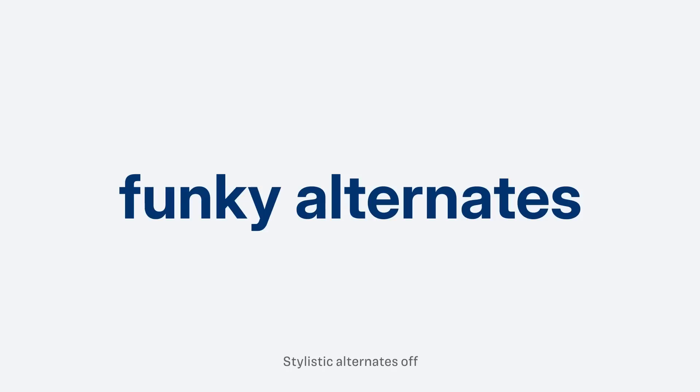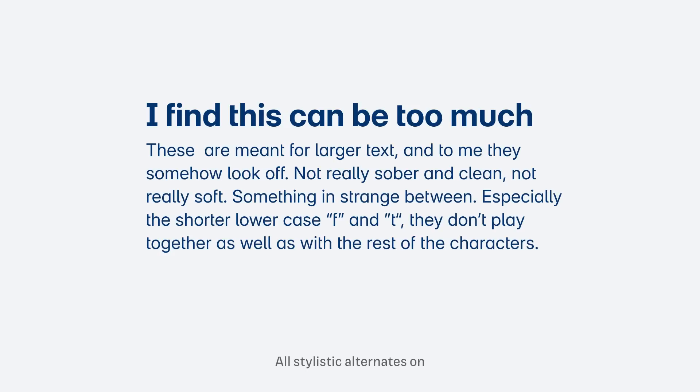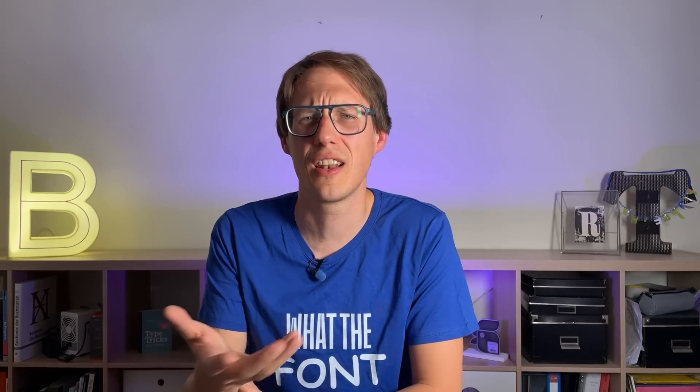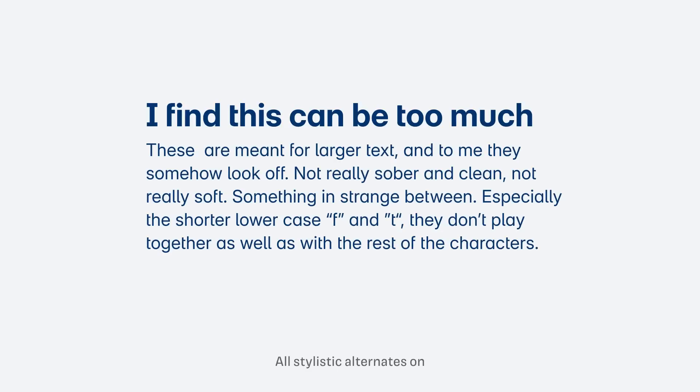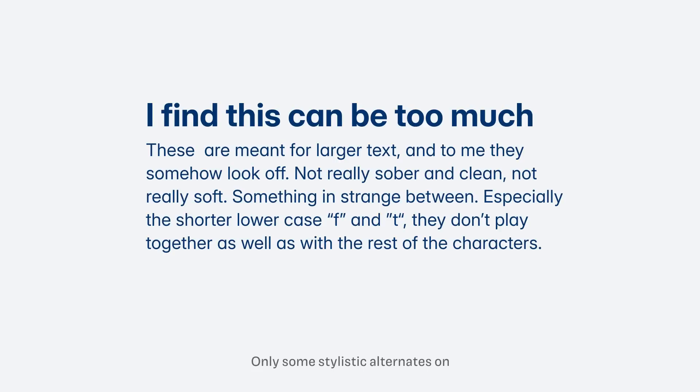Also new with version 4 are some additional stylistic alternates, which can highlight that softer look established by the true italics — like the shorter F and the shorter T, and also that simpler U. These are meant for large text, and to me they look somehow off. Not really sober and clean, not really soft and approachable — something strange in between. Especially the shorter lowercase f and t don't play together that well with the other characters. I appreciate that you can activate character variations individually, but I would leave these shorter versions out.